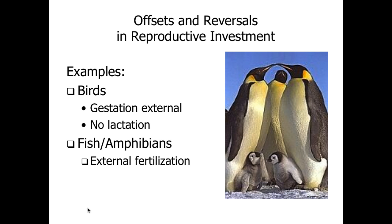With birds, they don't have significant internal gestation — they lay eggs and gestate by sitting on the nest. In many species, males and females take turns, so the reproductive investment is about the same, and their behaviors are not appreciably different. Female birds, not being mammals, don't have lactation, so they're not the only parent capable of raising the young. Both male and female can go get food and feed the offspring, leading to different patterns depending on whether they take equal care of their young.